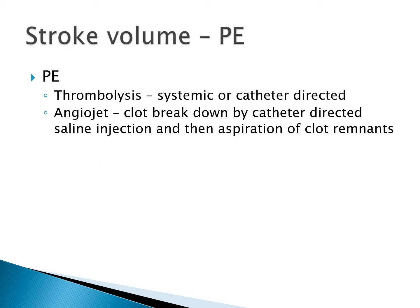With PE, systemic thrombolysis or catheter-directed thrombolysis is recommended where there are adverse features such as hypotension. Some centres are using Angiojet — clot breakdown via a catheter placed within the vessel with a directed high-pressure saline injection and aspiration of clot remnants.